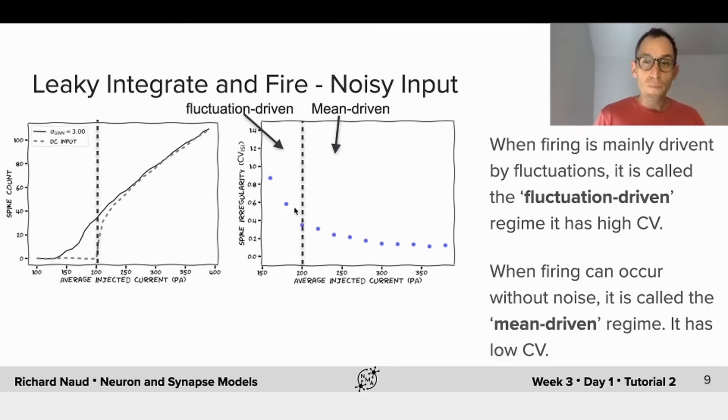This has driven people to talk about two regimes. We have the fluctuation-driven regime, where the neuron would not be able to fire if it were not of those fluctuations, and it is associated with high CV and high irregularity. And then there's the mean-driven regime, where the neuron is mostly driven by the mean, and the neuron is firing regularly at an inter-spike interval with very narrow distribution.